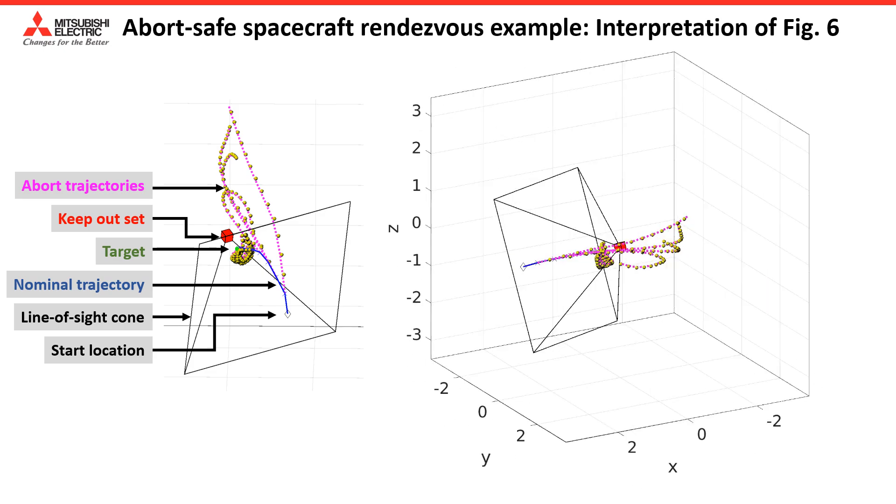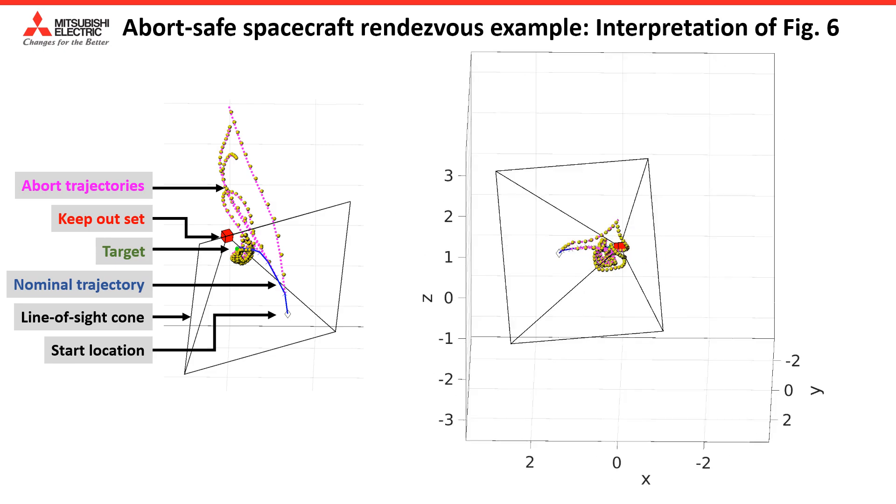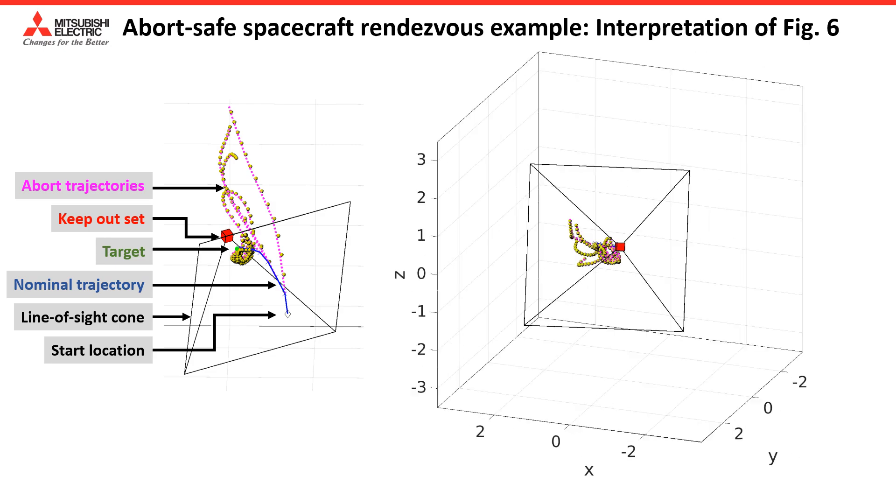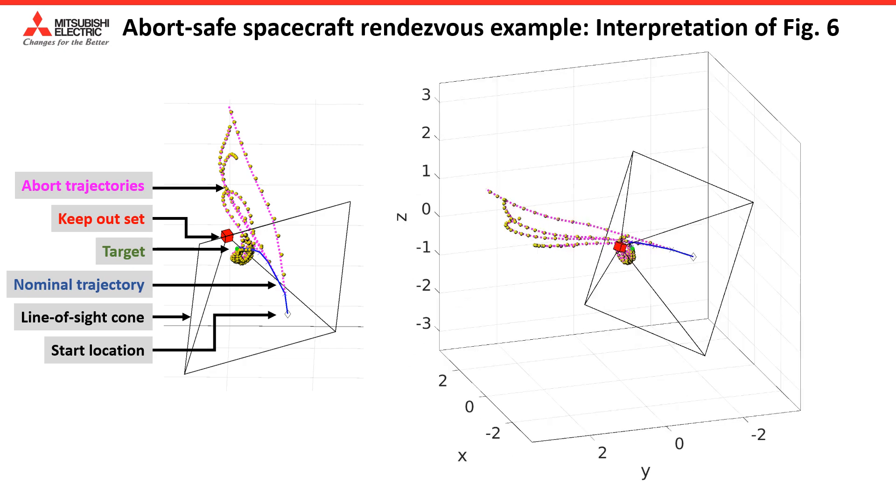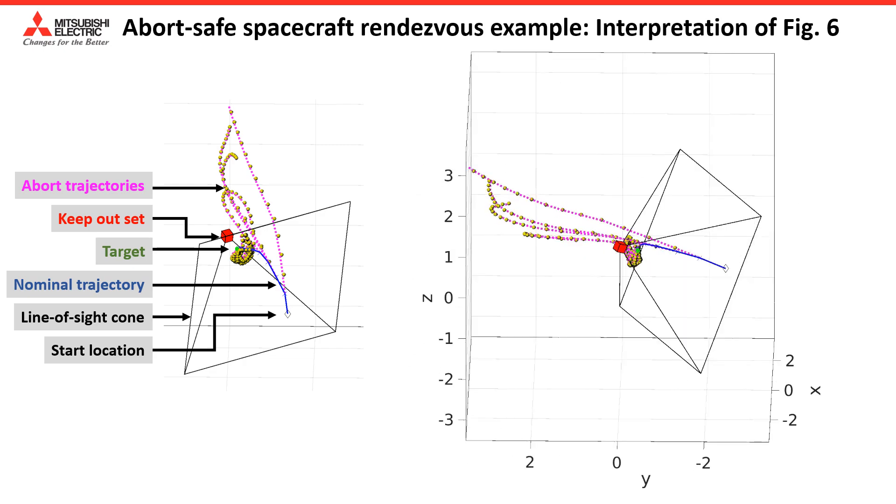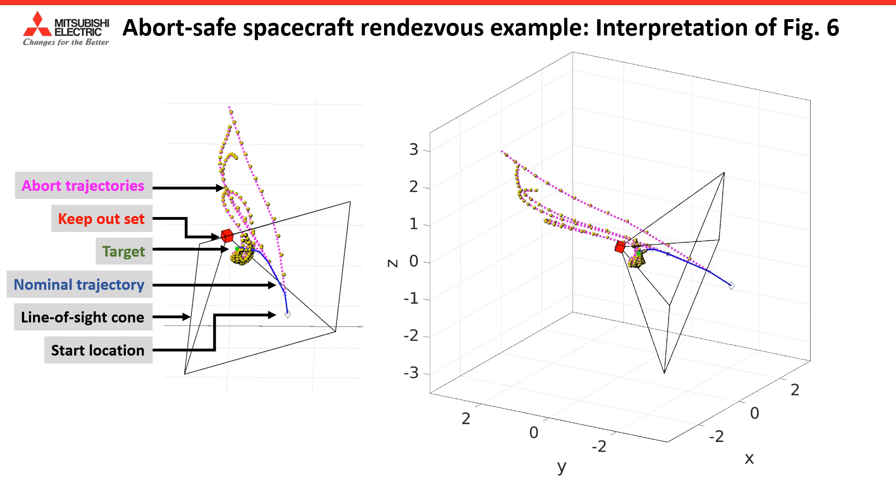In this example, we required a spacecraft in the final approach to a docking station to rendezvous with the docking station such that it retains the ability to abort.